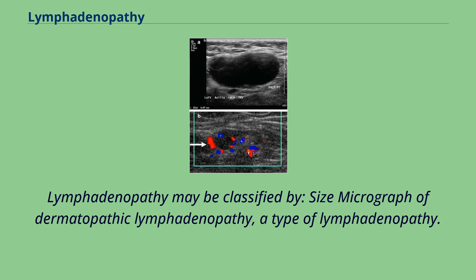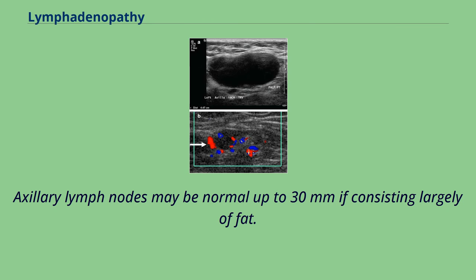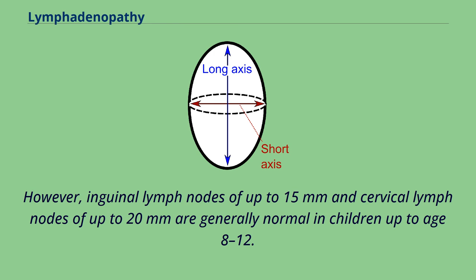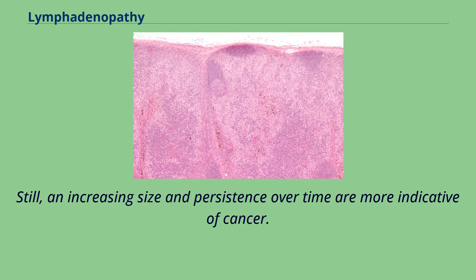Lymphadenopathy may be classified by size. Lymphadenopathy of the axillary lymph nodes can be defined as solid nodes measuring more than 15 mm without fatty hilum. Axillary lymph nodes may be normal up to 30 mm if consisting largely of fat. In children, a short axis of 8 mm can be used. However, inguinal lymph nodes of up to 15 mm and cervical lymph nodes of up to 20 mm are generally normal in children up to age 8–12. Lymphadenopathy of more than 1.5–2 cm increases the risk of cancer or granulomatous disease as the cause rather than only inflammation or infection. Still, increasing size and persistence over time are more indicative of cancer.